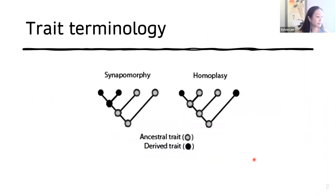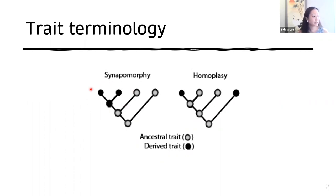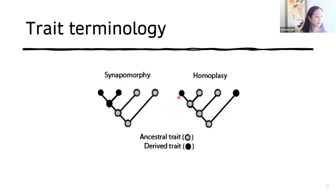When I talk about these reclassifications, I'll note the synapomorphies presented in the paper. Synapomorphies are derived traits shared by individuals within a genus. One way to understand it better is in comparison with homoplasy, which is when derived traits do not share a common ancestor — for example, the canal raphes in the Bacillariophyceae and the Surirellales.